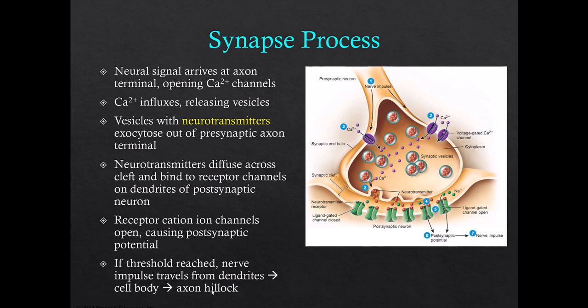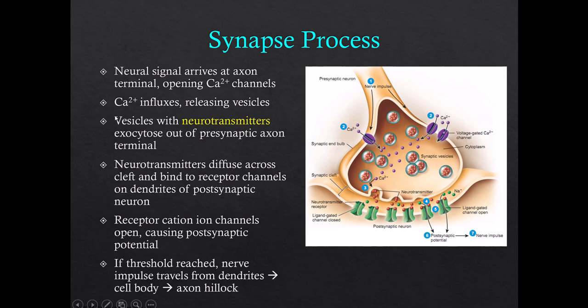That's how this process occurs — neuron to neuron, neuron to effector cell. The action potential travels down the axon, is generated at the axon hillock, causes the release of neurotransmitters to another neuron, and causes the signal to travel further throughout the body. That is how our brain is responsible for regulating and being the boss of so much of what our body does.